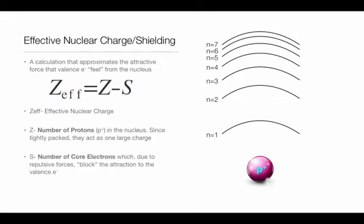S represents the number of core electrons. Since the repulsive forces of the inner electrons—the electrons are negative and repel each other—these core electrons block the attraction of the valence electrons. I put that in quotes because they're not actively blocking it, but in a sense...